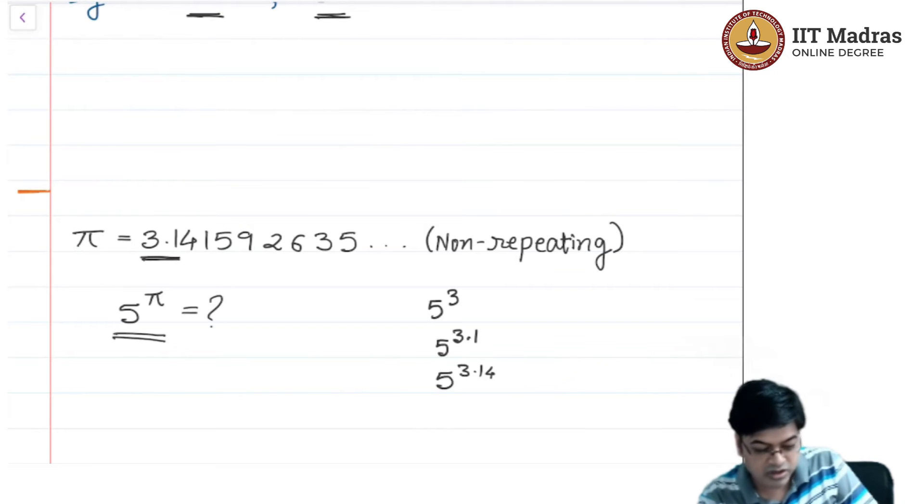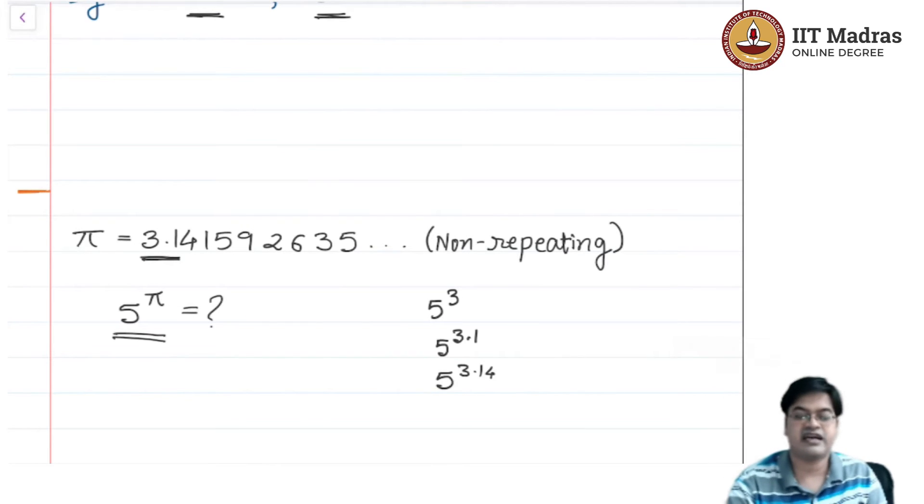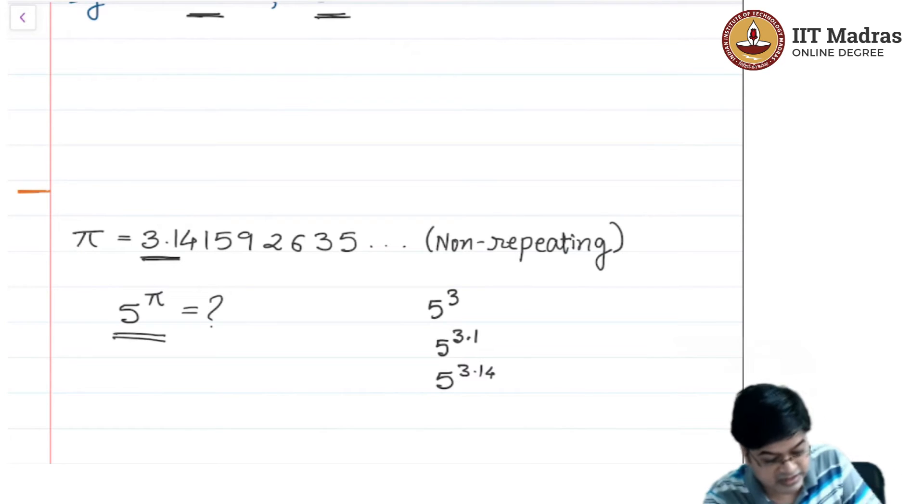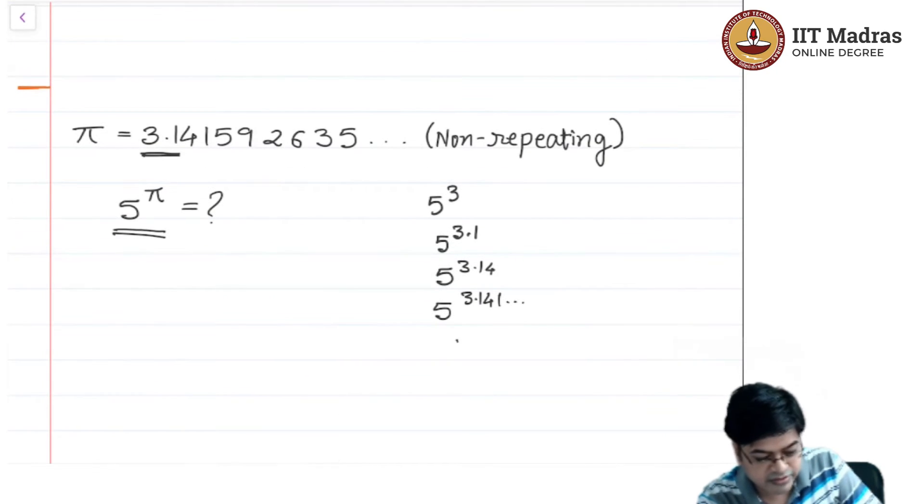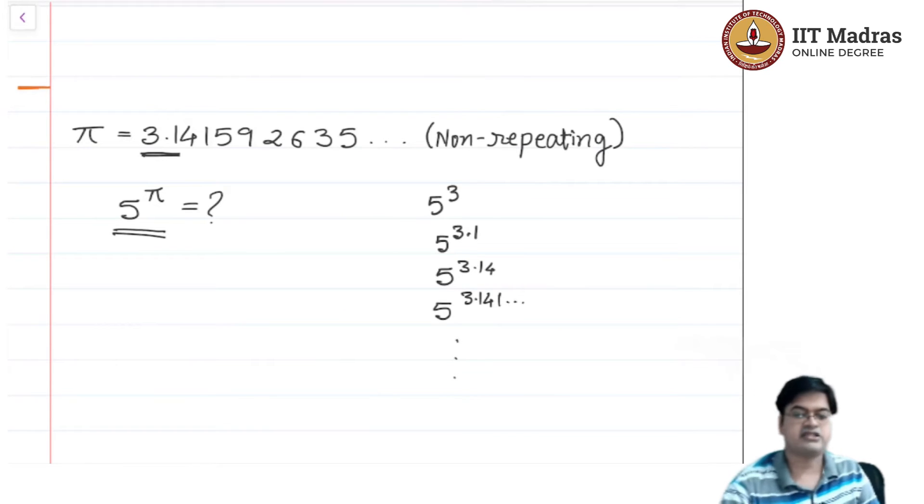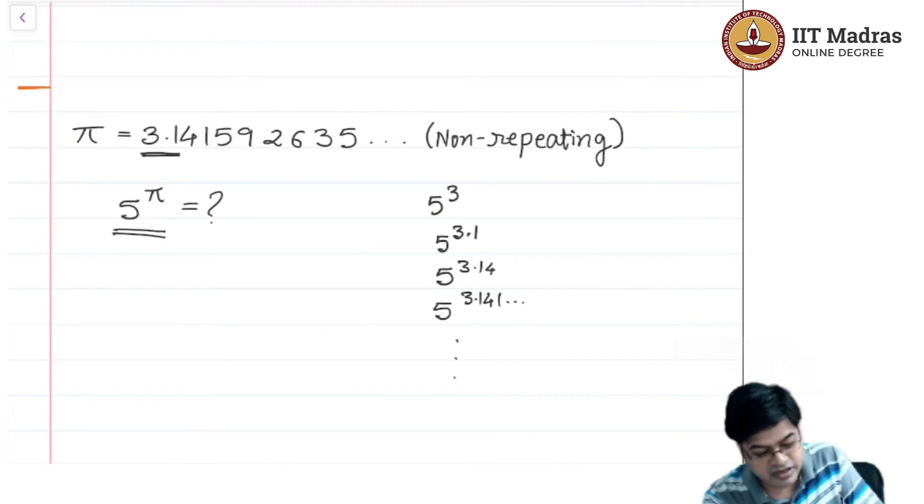What I am doing here is this: if yes, can I define 5 raised to 3.14? Now remember all these approximations are actually rational approximations. 3 is rational, 3.1 is 31/10 which is rational, 3.14 is 314/100 which is again rational, and I can go on like this: 3.141 and so on. If I continue this way, I will reach somewhere, and that somewhere I will call as 5 raised to pi.